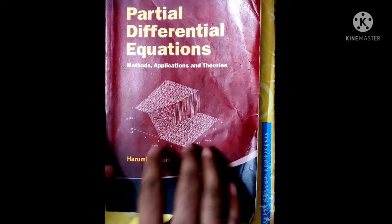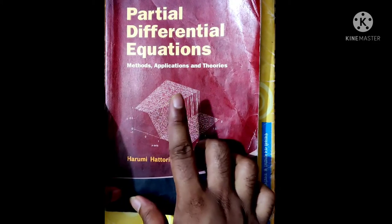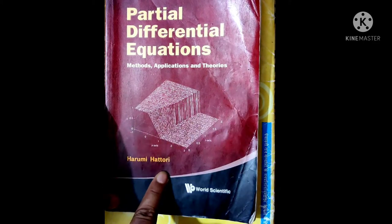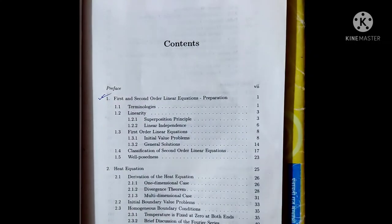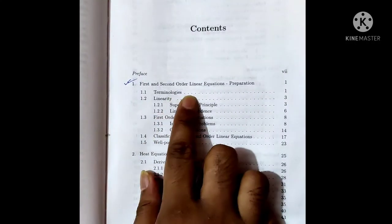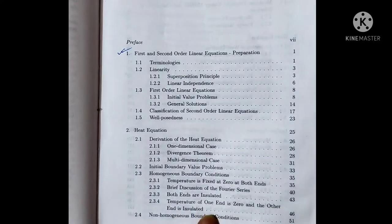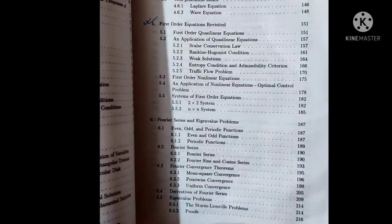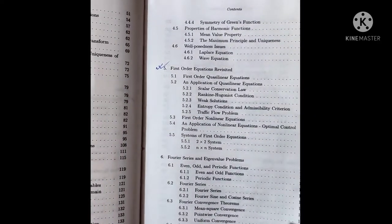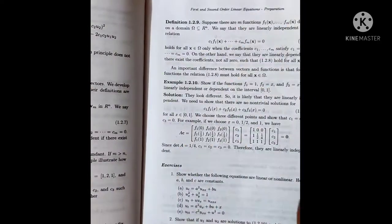The first book in my list is 'Partial Differential Equations: Methods, Applications and Theories' by Harumi Hattori. In this book we learn about first order equations, first and second order linear equations, heat equations, wave equations, and Laplace equations. This is a good book for learning partial differential equations.